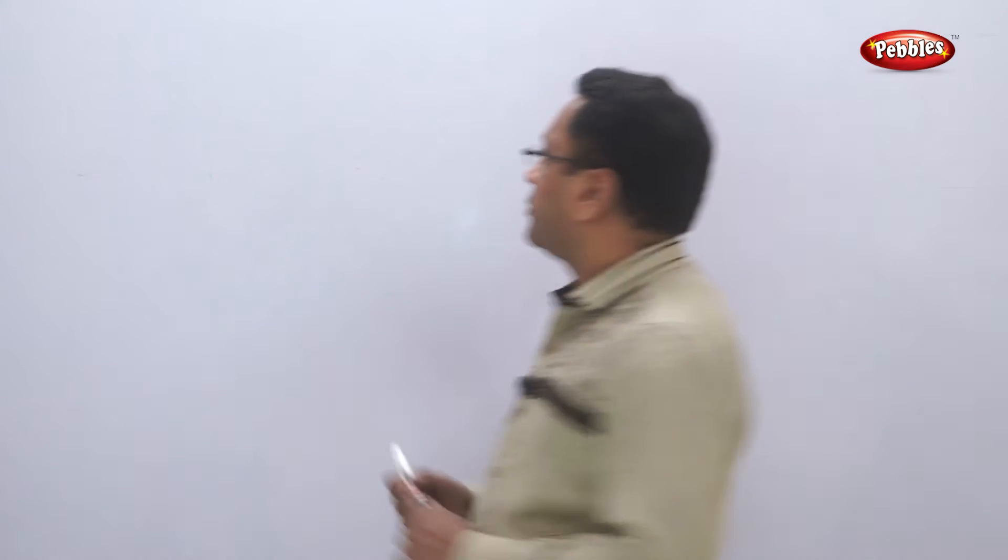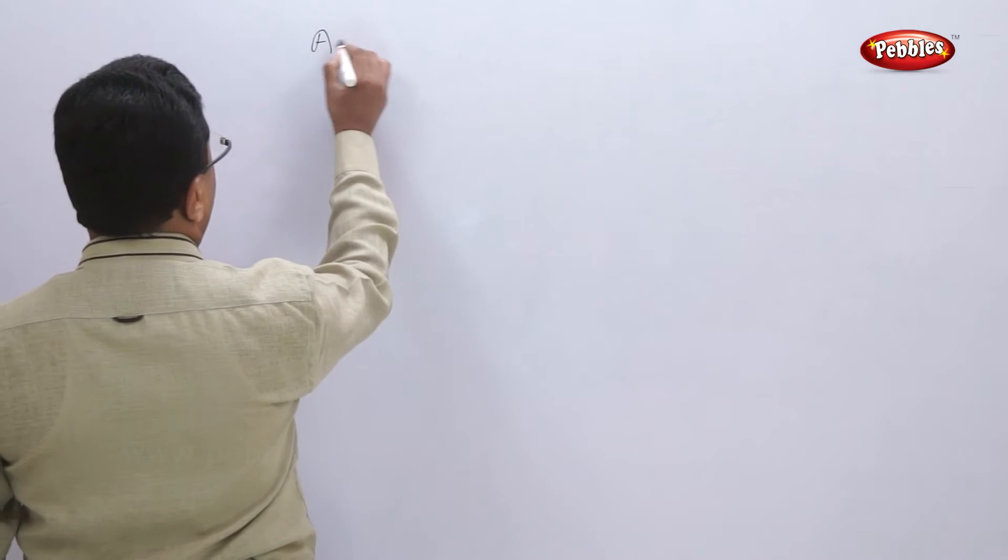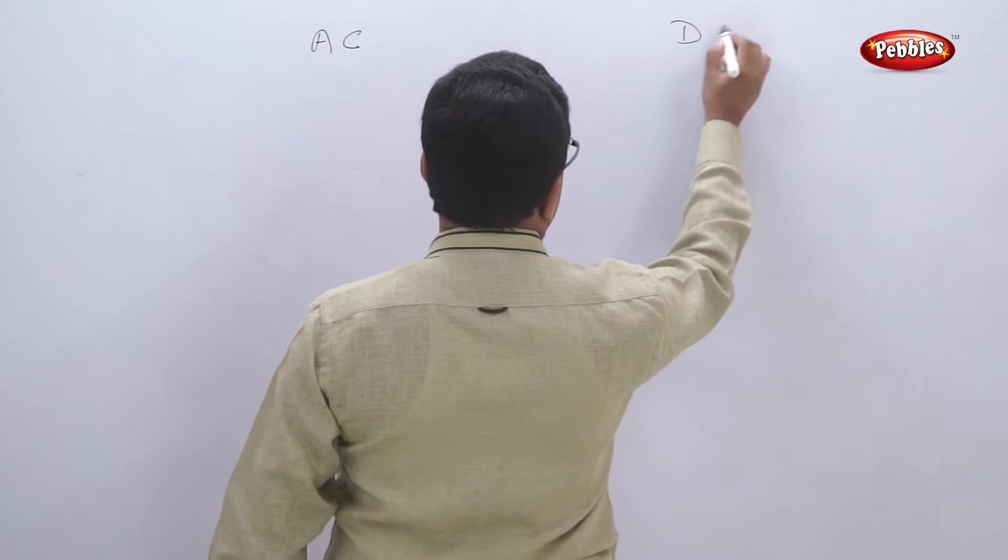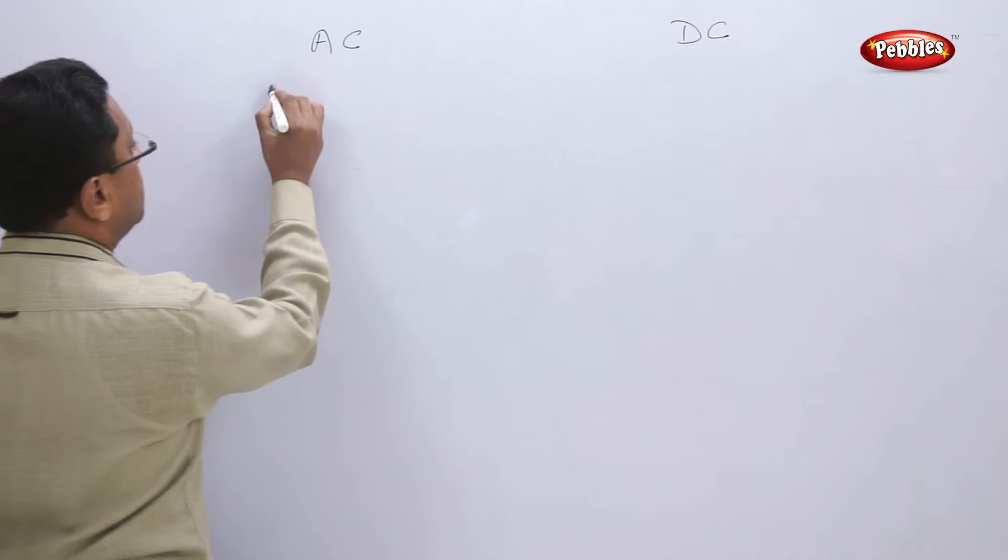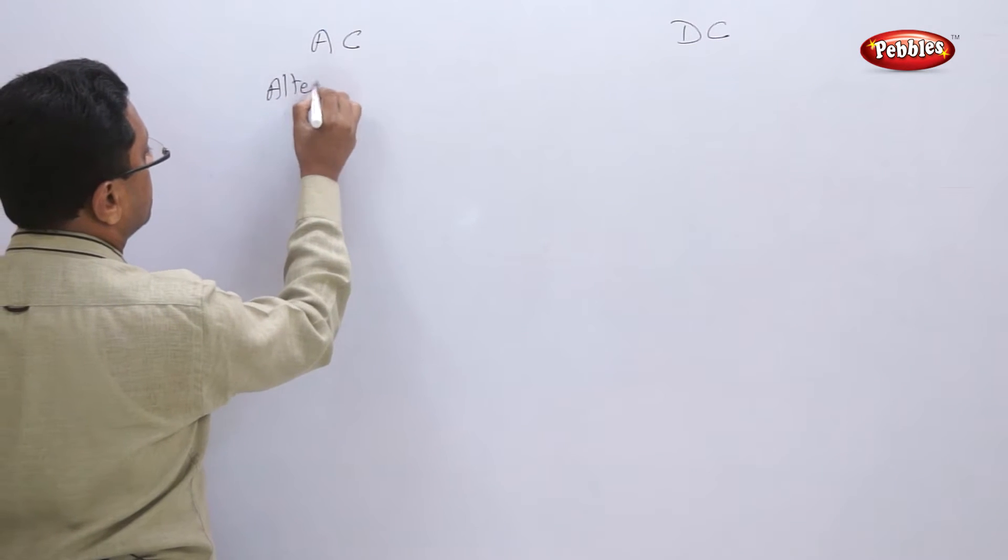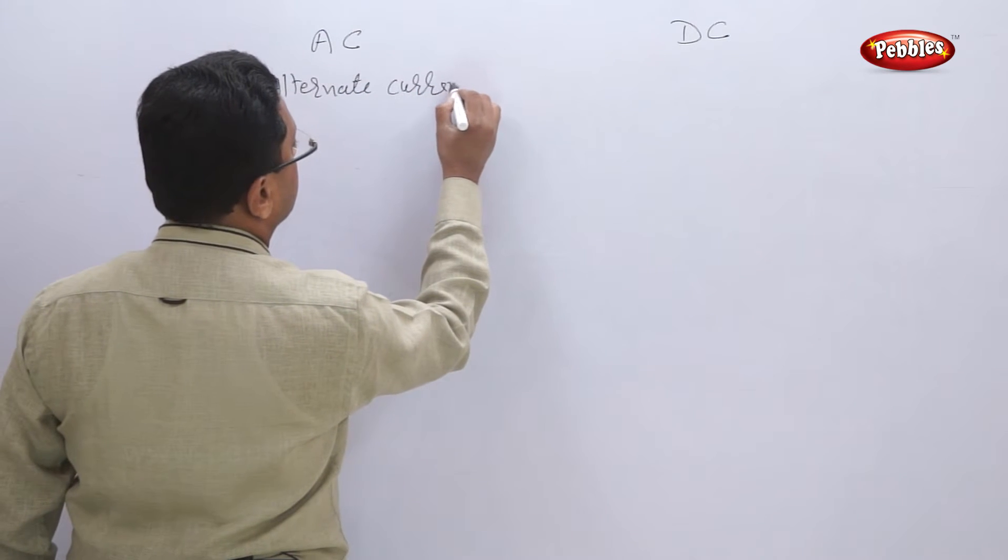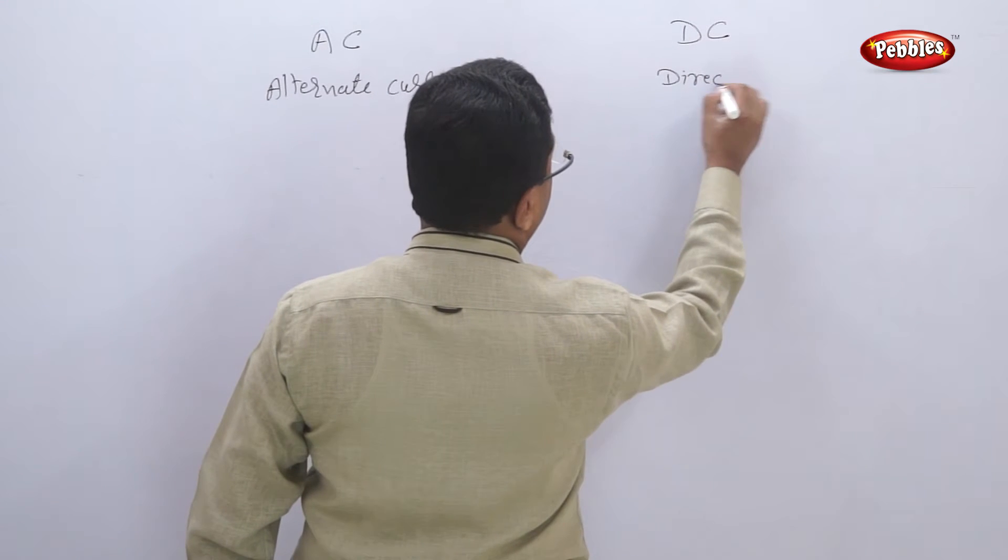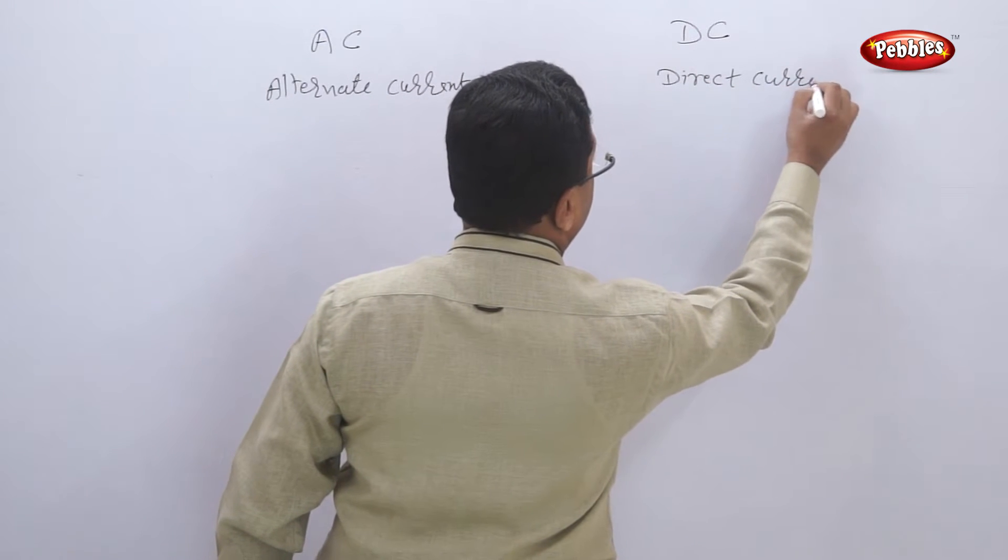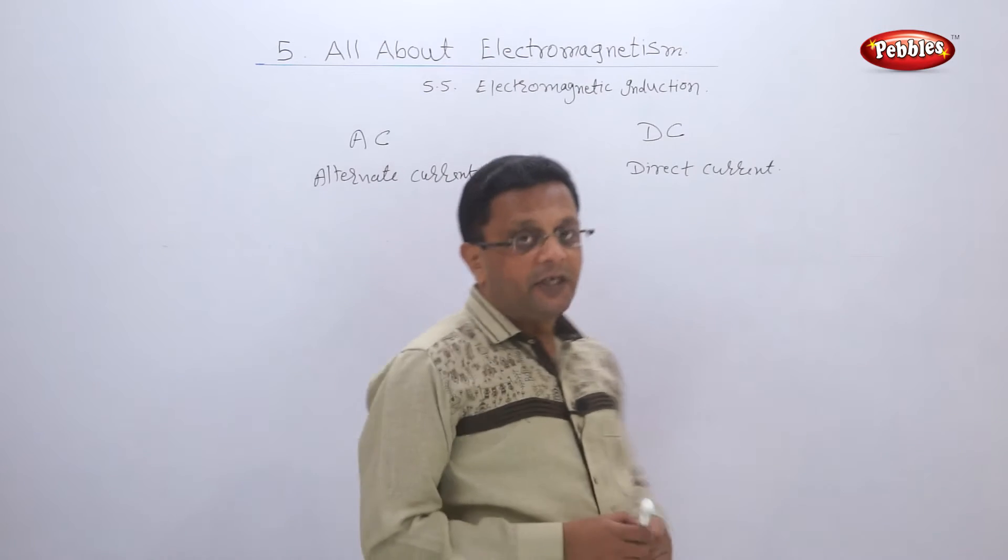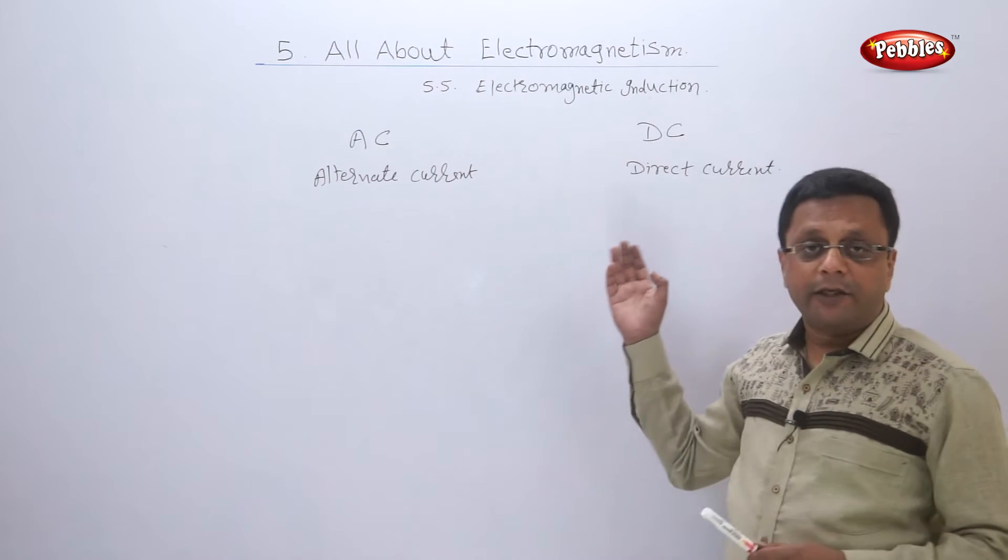Now let us learn about alternating current and direct current, generally called AC and DC. AC is alternating current and DC is direct current. In the case of DC, the magnitude and direction of the current are constant.